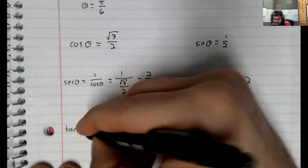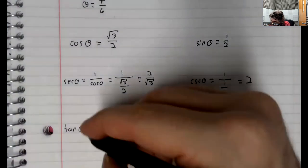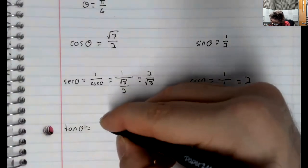The tangent is the sine over the cosine.